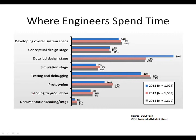UBM Tech puts out a yearly study on the embedded market, and one graph that always catches my attention shows where engineers spend the bulk of their time. It's clear based on this chart that testing and debugging make up a significant portion of an engineer's project schedule. So it's certainly helpful to make sure engineers have the right tools to ensure that their time is used efficiently, which would have a direct effect on improving time to market. I can guarantee that engineers will have an easier time testing, resulting in fewer headaches by using Corellis products.